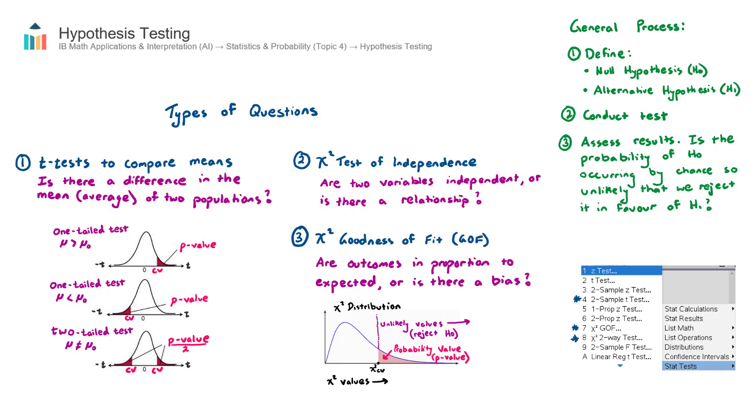Now, for all three of these types of questions, we progress through the same general process. Just the second step here is different. So the process is step one, we define the null hypothesis and then also the alternative hypothesis. The null hypothesis, that's the important one. That's the status quo.